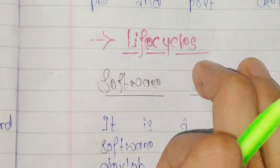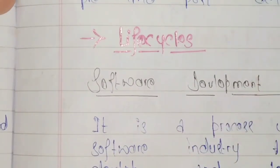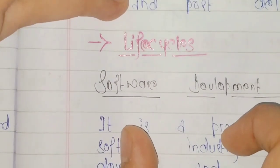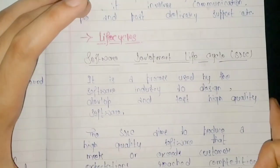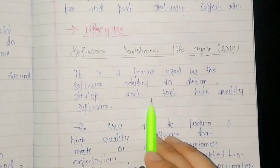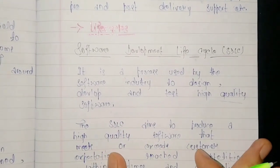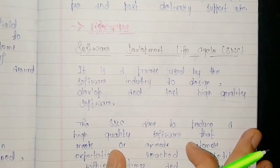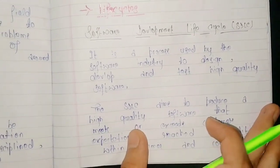Life cycle: basically when we develop a software application, let's see what we can do. It is the process used by the software industry to design, develop and test high quality software. This is a life cycle process in the software industry, so that we can develop high quality software applications.